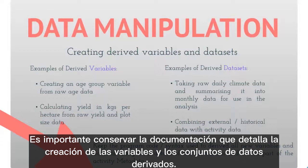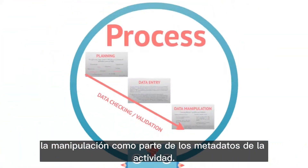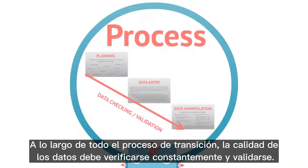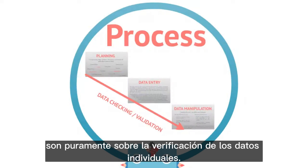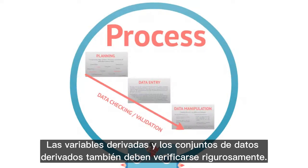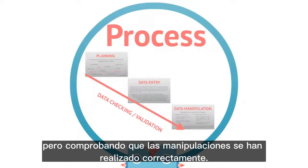It is important to keep documentation detailing the creation of the derived variables and data sets. You should keep the program code or syntax used to perform the manipulations as part of the activity metadata. Throughout the whole transition process, data should be constantly checked for quality and validated. Data checks prior to the data manipulation stage are purely about checking the individual pieces of data. Derived variables and derived data sets should also be rigorously checked to ensure the manipulations have been conducted correctly.